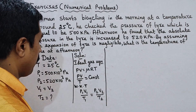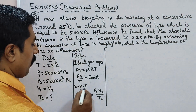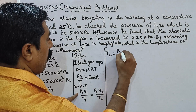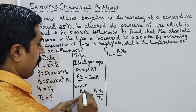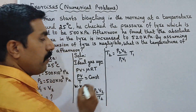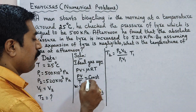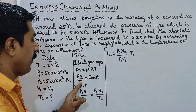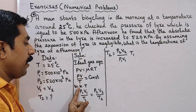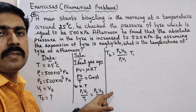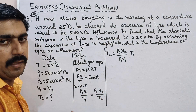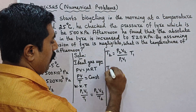By cross multiplication, T2 is equal to P2V2 divided by P1V1, multiplied by T1. Let's check: PV by T equals constant; initial P1V1 by T1, final P2V2 by T2. So P1V1 by T1 equals P2V2 by T2.